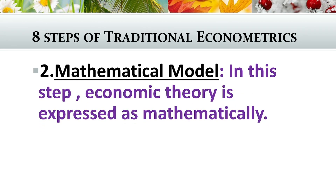The second step is the mathematical model. In this step, economic theory is expressed mathematically. If we want to express the consumption function mathematically, we can write: y = β1 + β2x. Here y is the dependent variable and x is the independent variable, also called the explanatory variable. β1 is the intercept and β2 is the slope coefficient.